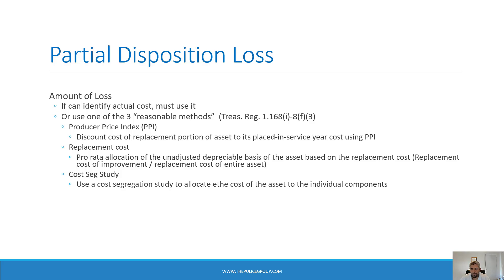The second option is a pro rata replacement cost. This allows you to take the replacement cost of the improvement divided by the replacement cost of the entire asset, and calculate a ratio to use on the existing net tax basis of the asset to determine the partial disposition amount. So let's say it costs $10,000 to replace the roof and we determine it's $100,000 to replace the entire building structure — that's a ratio of 10%, which can be used on the existing net tax basis for disposal. Generally, to determine the replacement cost of the asset you'll need to hire an appraiser.